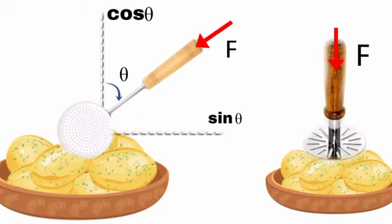This is the reason why the vegetables get smashed easily when I use the smasher compared to the ladle.